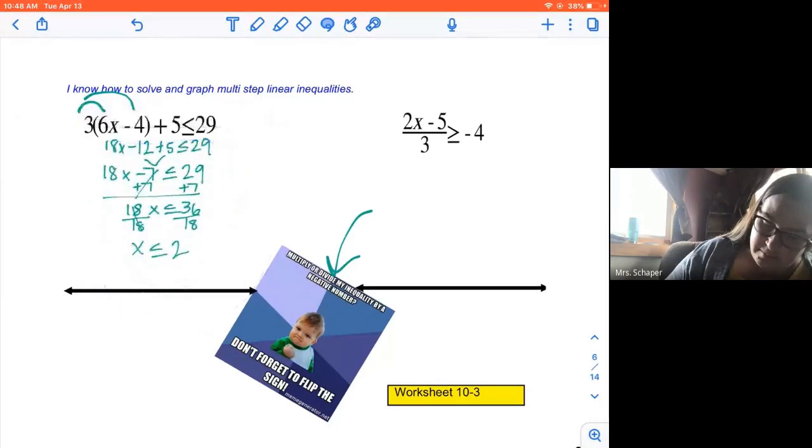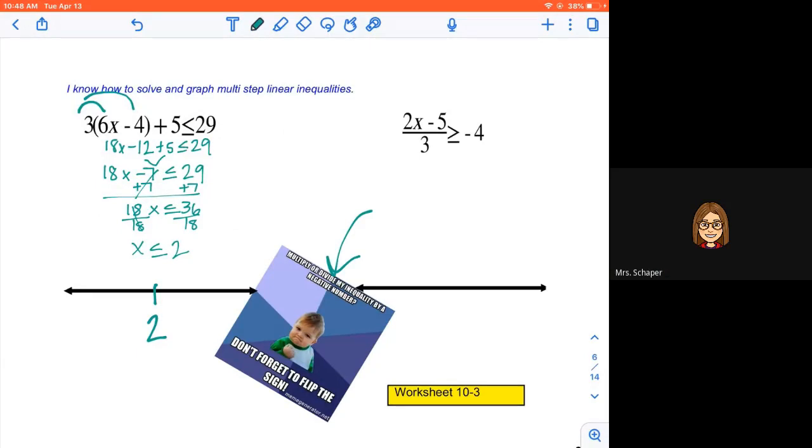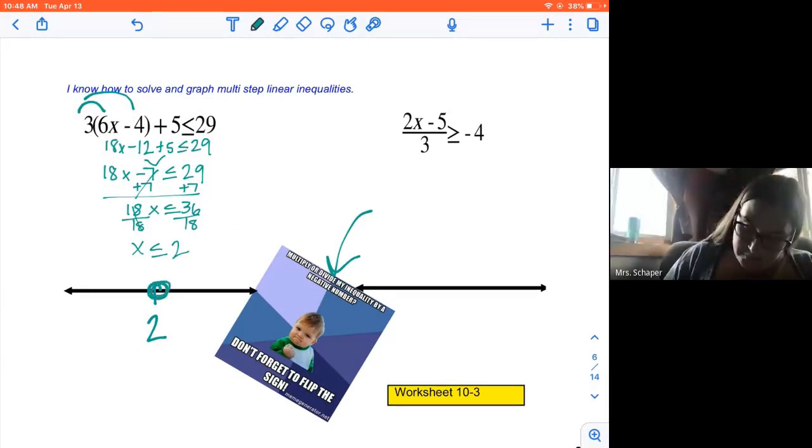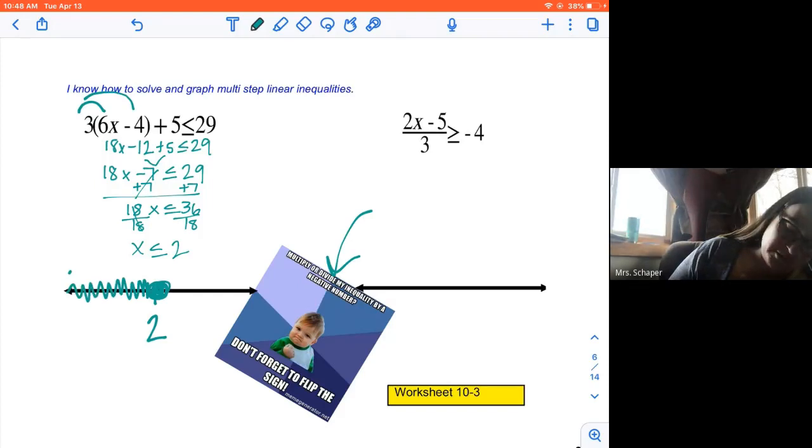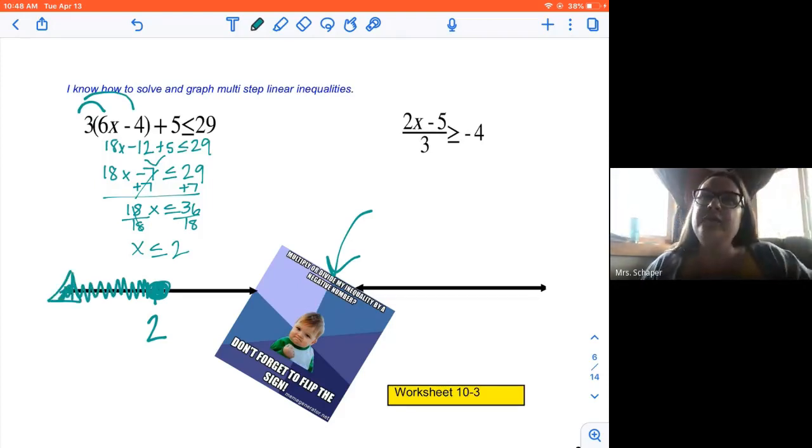So I'm going to shorten this up just a little bit. All right. So here we go. Here's a 2. We're going to put a filled in circle. And if X is less than or equal to 2, 0, negative 7, those are all to the left and those are all less than. So I'm looking for numbers that when I put them in for X, will make it true. And I'm going to shade that direction on the line. So here we go. One more.